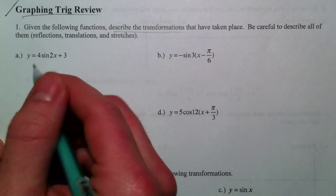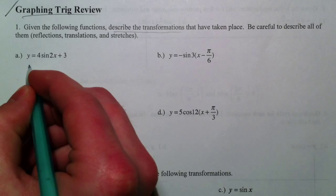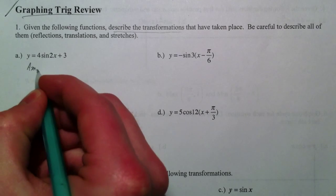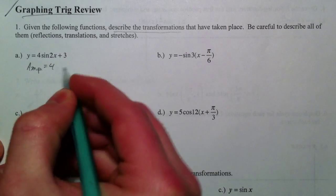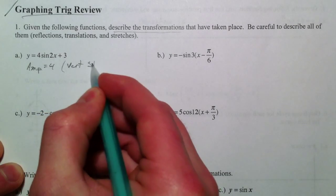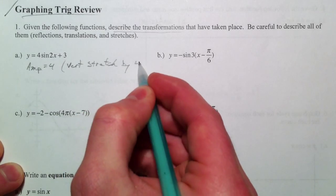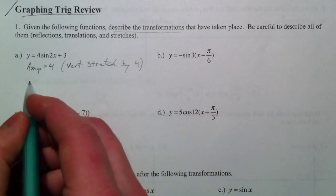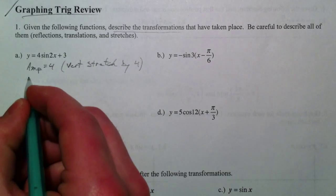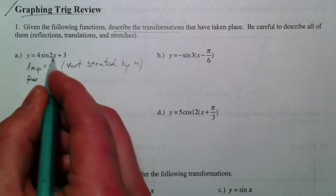So what we did at the beginning, we always talked about, okay, so the 4, that's the amplitude. That's what we call a vertical stretch. And the 2 changes the period, so the period, because it's with the x, it's changing it horizontally.